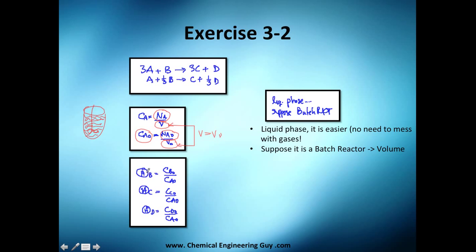Now let's work out the Θ (theta) functions for B, C, and D. It's just the initial concentration of B divided by the initial concentration of A, the initial concentration of C divided by the initial concentration of A, and the same for D.